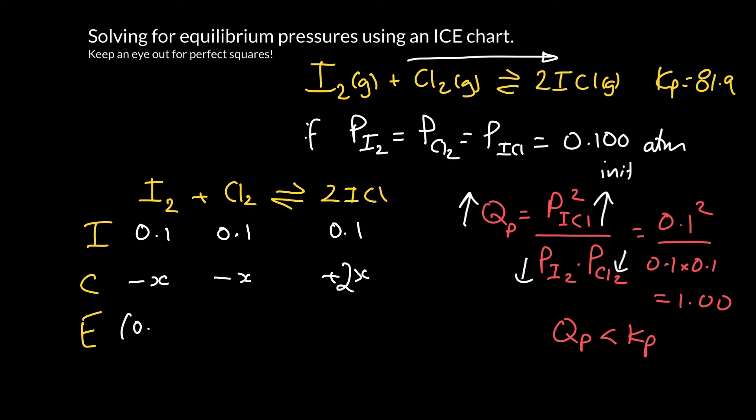At equilibrium, I can just add together the top and the middle line, so 0.1 minus X for each of those, and at the bottom here, this is 0.1 plus 2X. So at this point here, we can calculate the equilibrium constant, Kp: pressure of ICl at equilibrium squared, over the pressure of iodine times the pressure of chlorine at equilibrium.